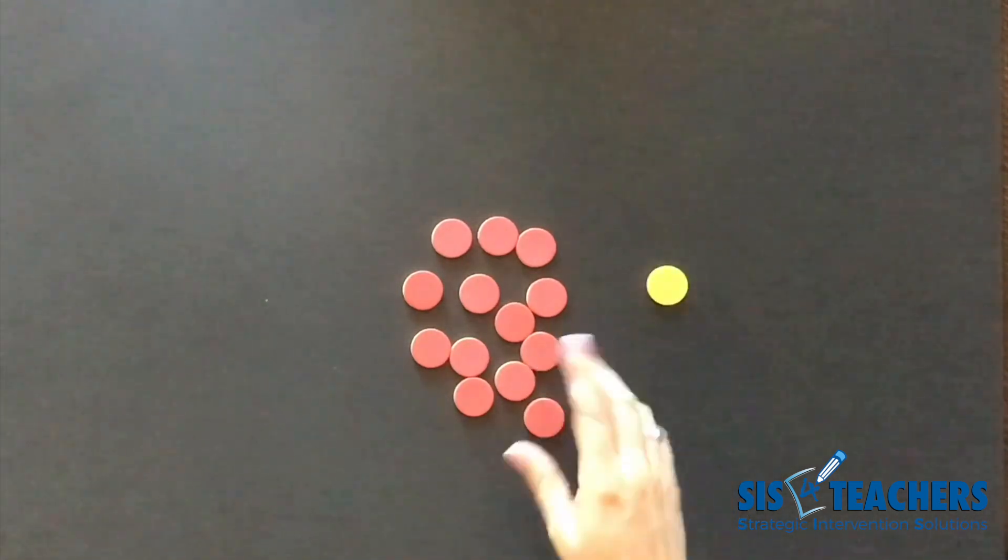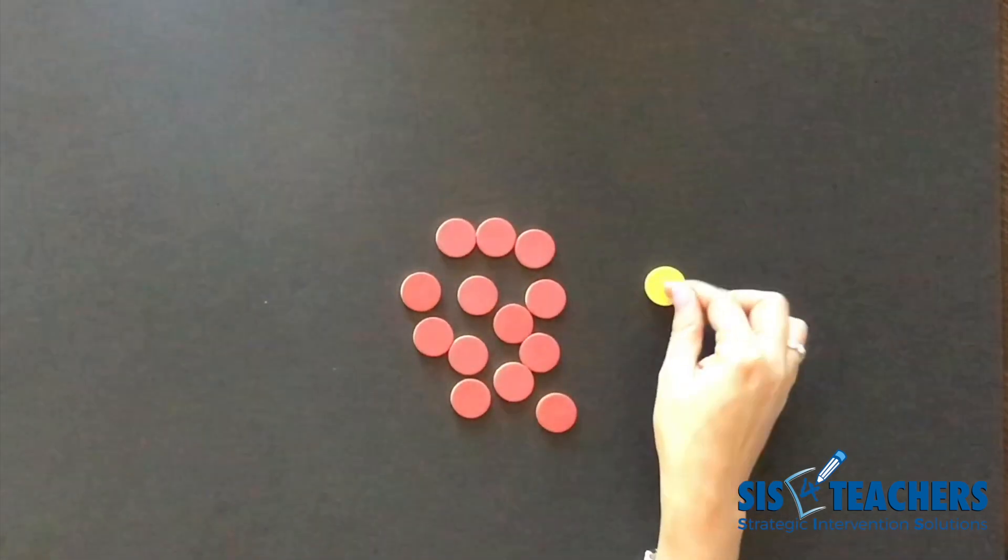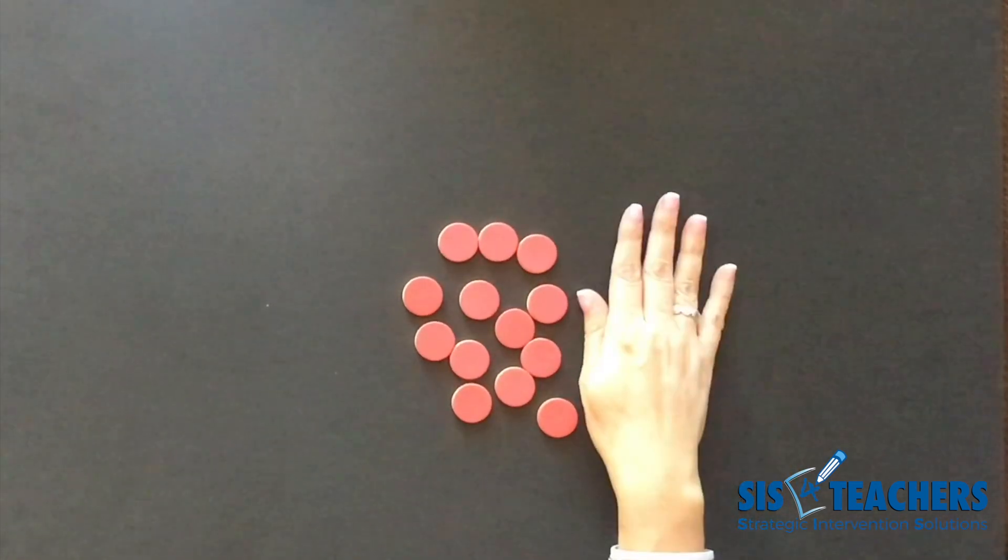I've also played this with my own kids in a restaurant where we've taken 12 sugar packets, and those are the good apples, and we've taken one sweet and low packet, and that's kind of the rotten apple.